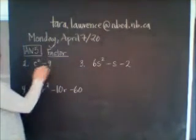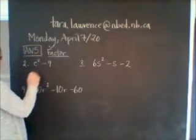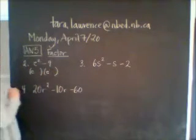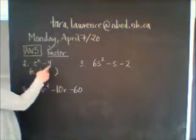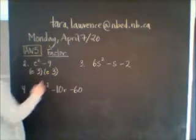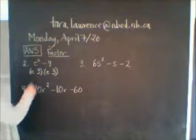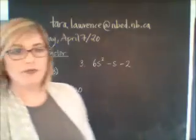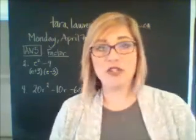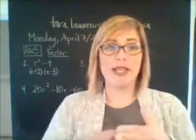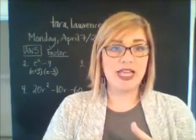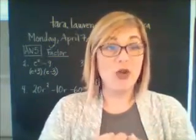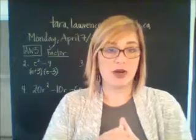When I have a difference of squares — that's what this is called — I take two brackets, take the square root of the first one, which is e, and it goes in the first spot of each bracket. Then the square root of the second one, which is 3. One bracket is a plus and one is a minus. If you pause your video and check that by expanding, you would see that the middle two terms — a positive 3e and a negative 3e — would actually cancel each other out, which is why it goes back to e squared minus 9.